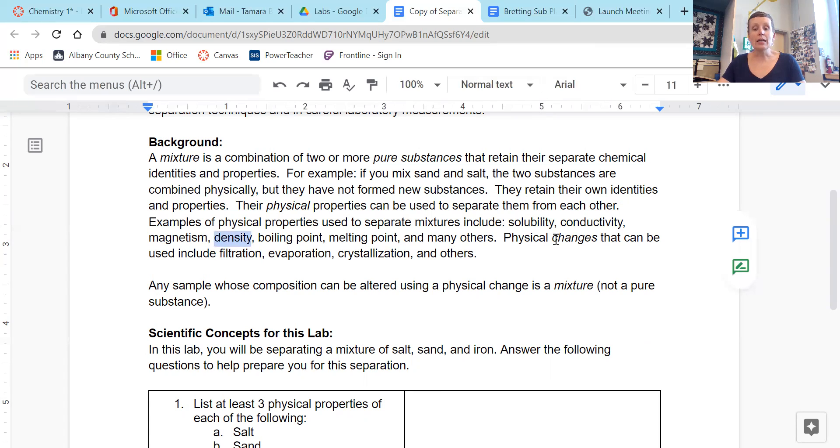Now, physical changes. So a little different word there. Physical changes that can be used include filtration, evaporation, crystallization, and others. So these are examples of changes versus these up here are properties, but they're all physical. Any sample whose composition can be altered by using a physical change is a mixture, not a pure substance.